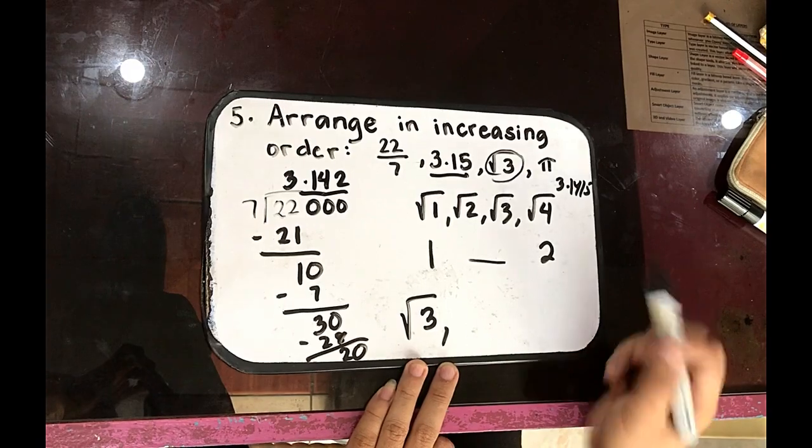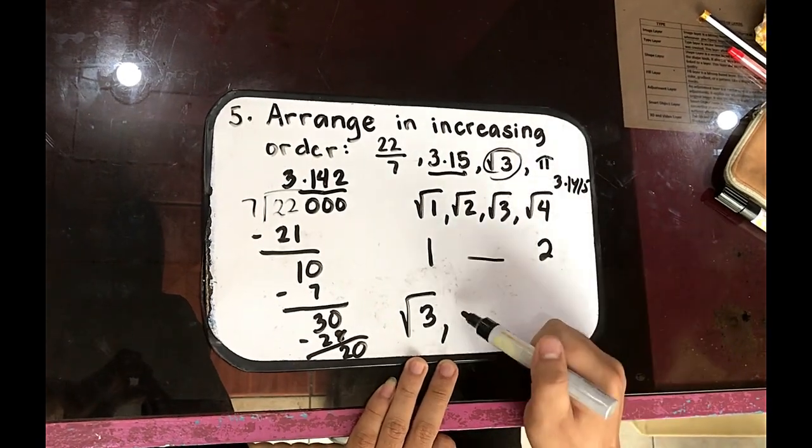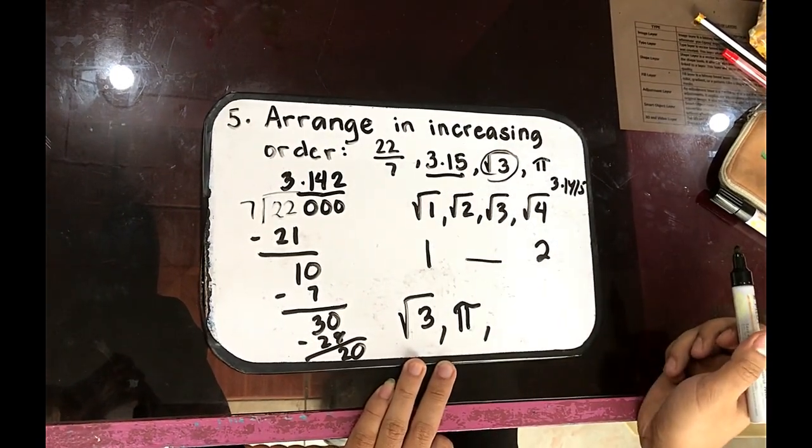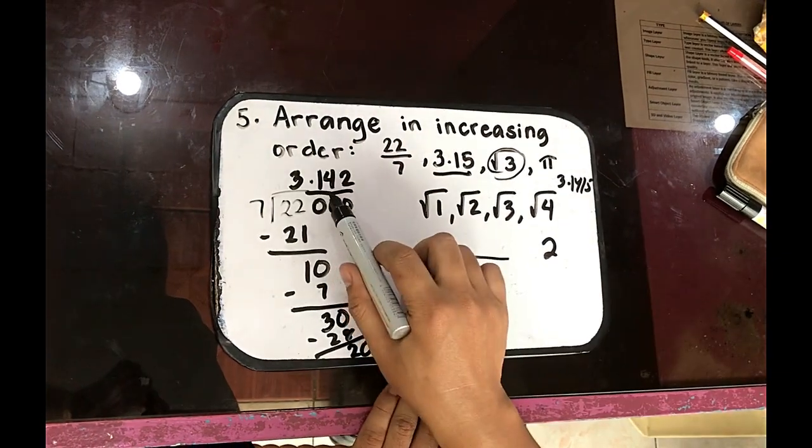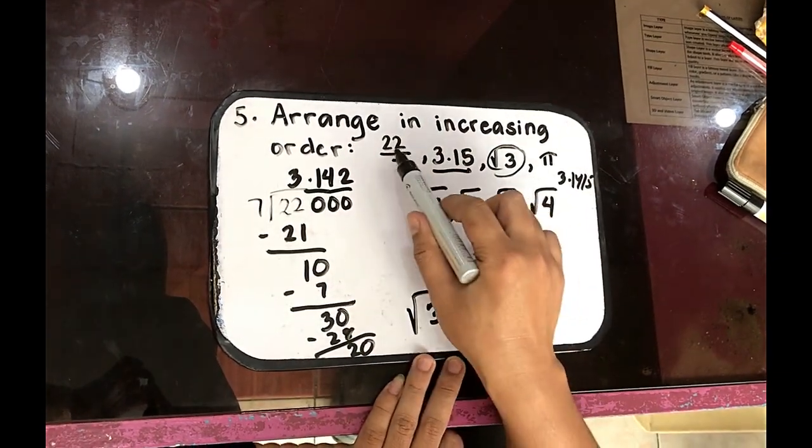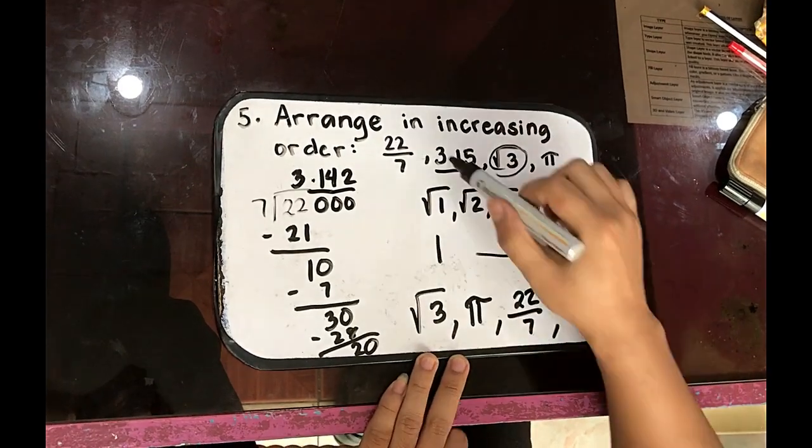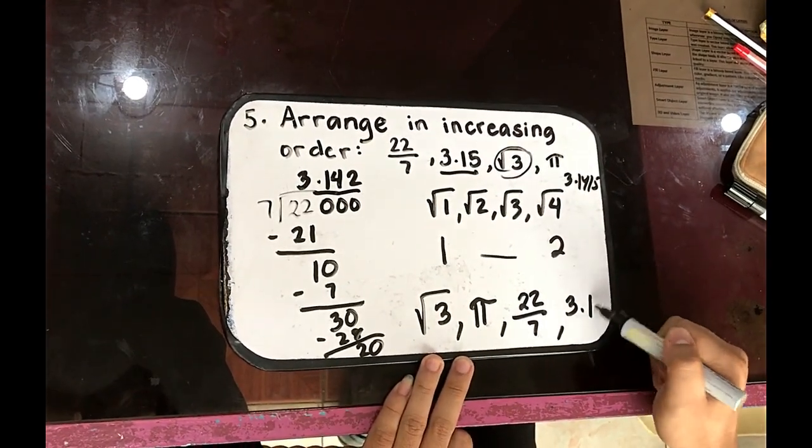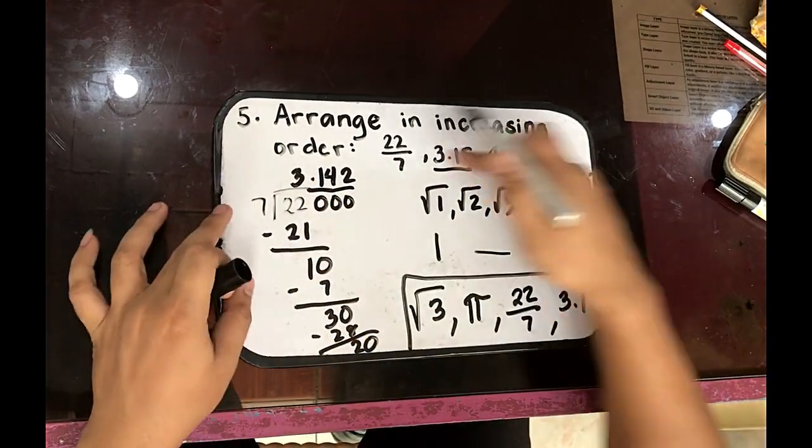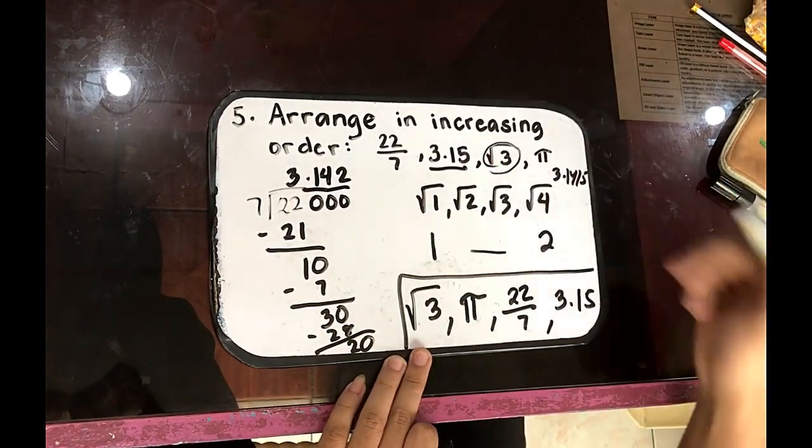Followed by 3.1415, the pi. Followed by 3.142 or 22 over 7. And lastly, 3.15. So this is now the increasing order of this question.